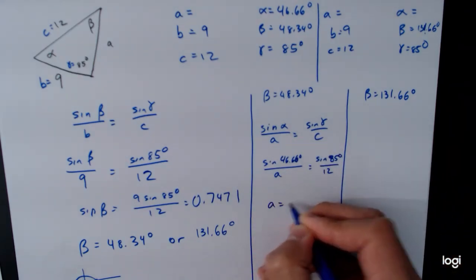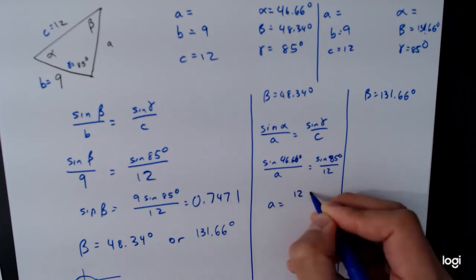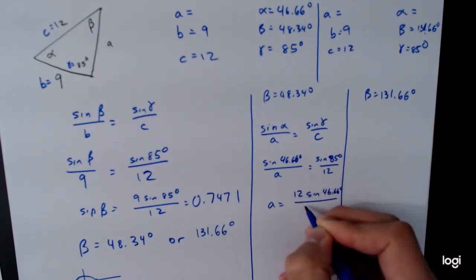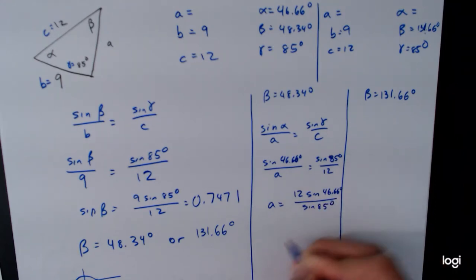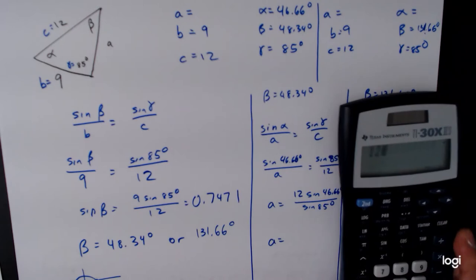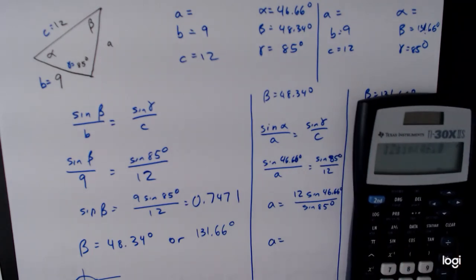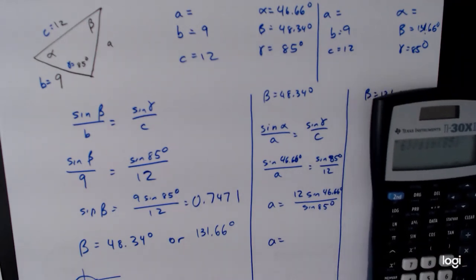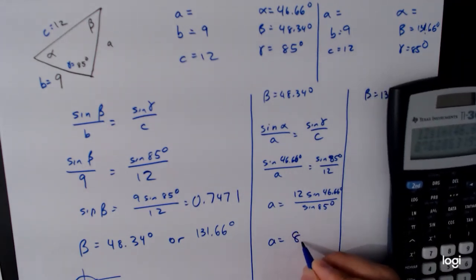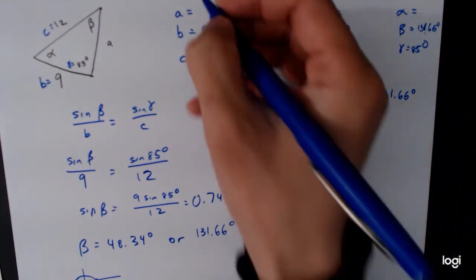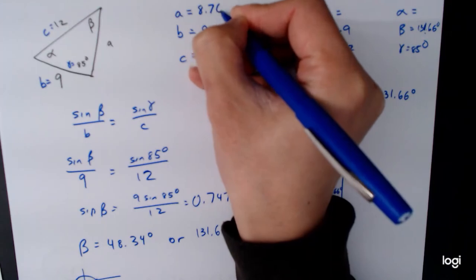When we do all the algebra, 12 sine of 46.66 degrees over sine of 85 degrees. When we plug that in, we get 12, let's see, sine of 46.66 divided by sine of 85, 8.76. So in this case, 8.76.